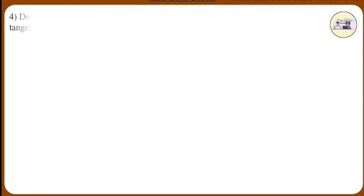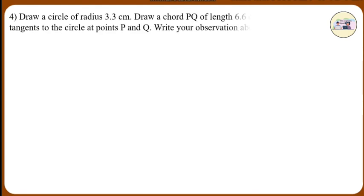Question 4: Draw a circle of radius 3.3 cm. Draw a chord PQ of length 6.6 cm. Draw tangents to the circle at points P and Q. Write your observation about the tangents. Analysis: